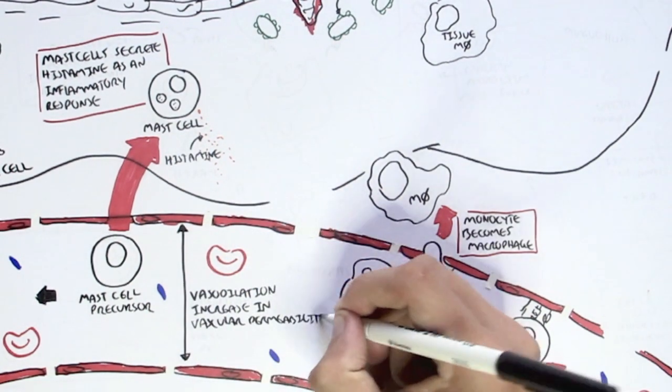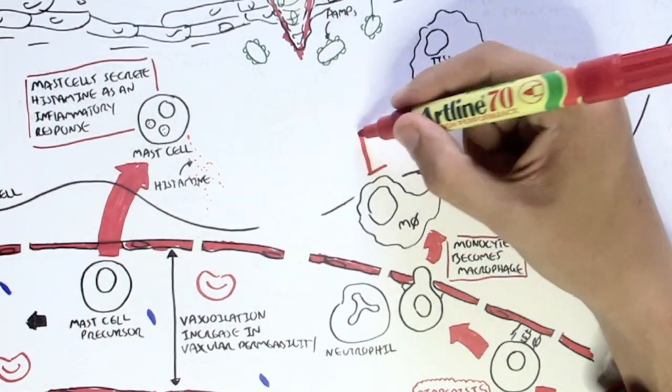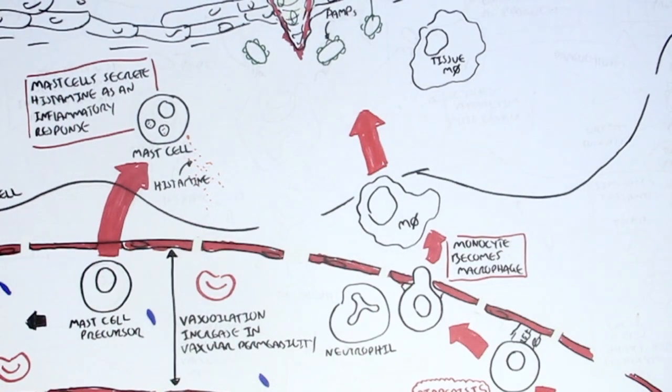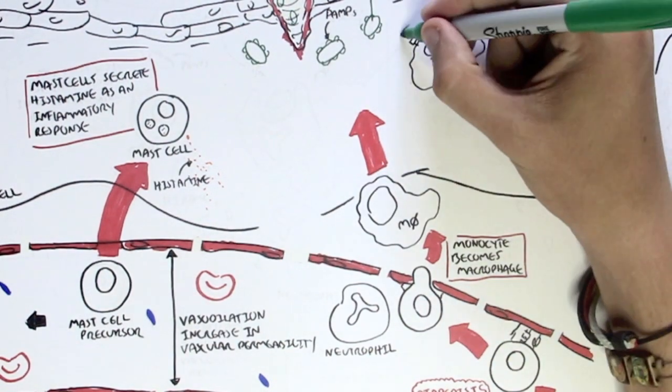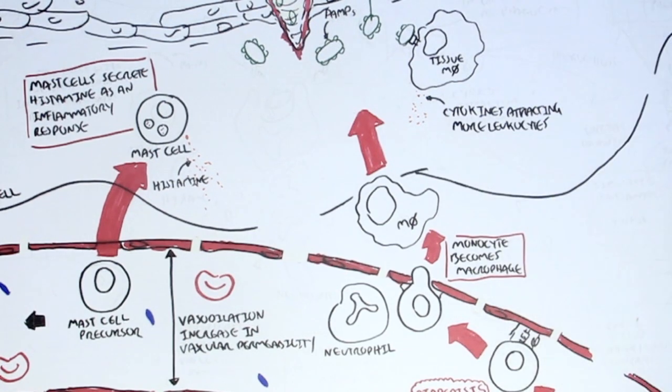And similarly, the tissue macrophages, which also recognizes these PAMPs, will start secreting cytokines, which would attract more leukocytes or telling more leukocytes to come into this infiltrated area.